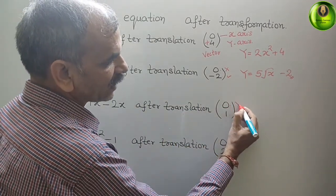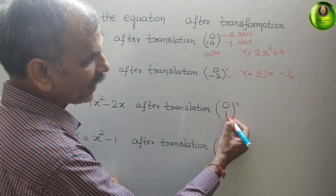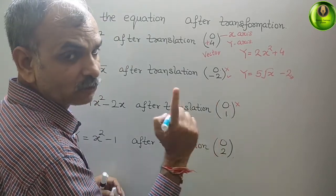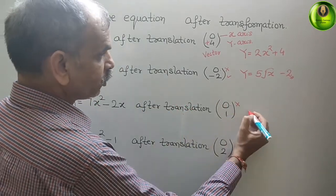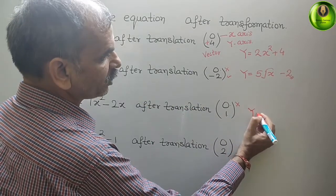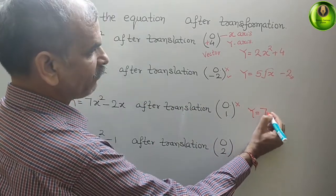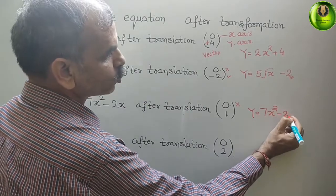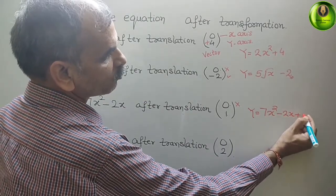So here in x-axis, there is no translation. And in y, it's 1. That means plus 1. So here you will get y = 7x² - 2x + 1.